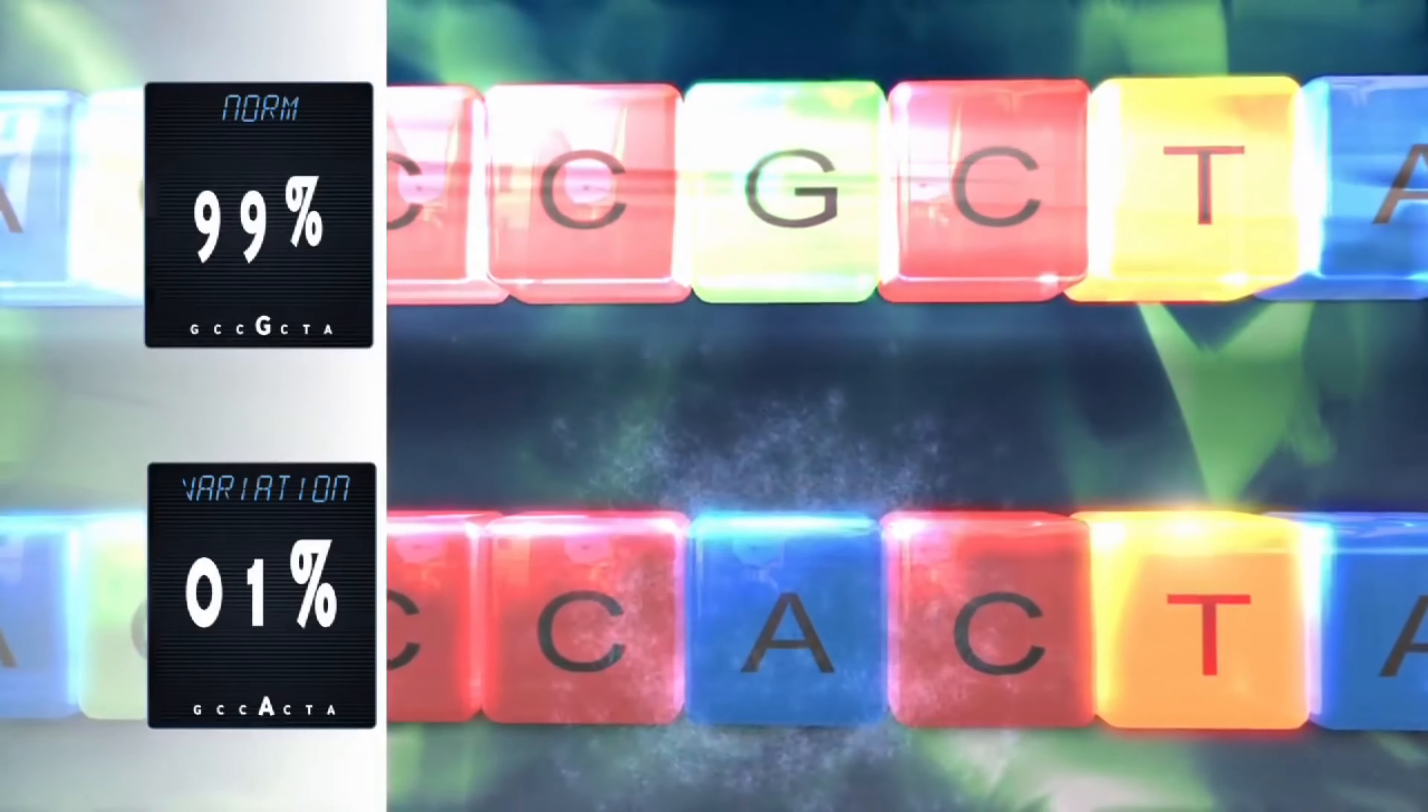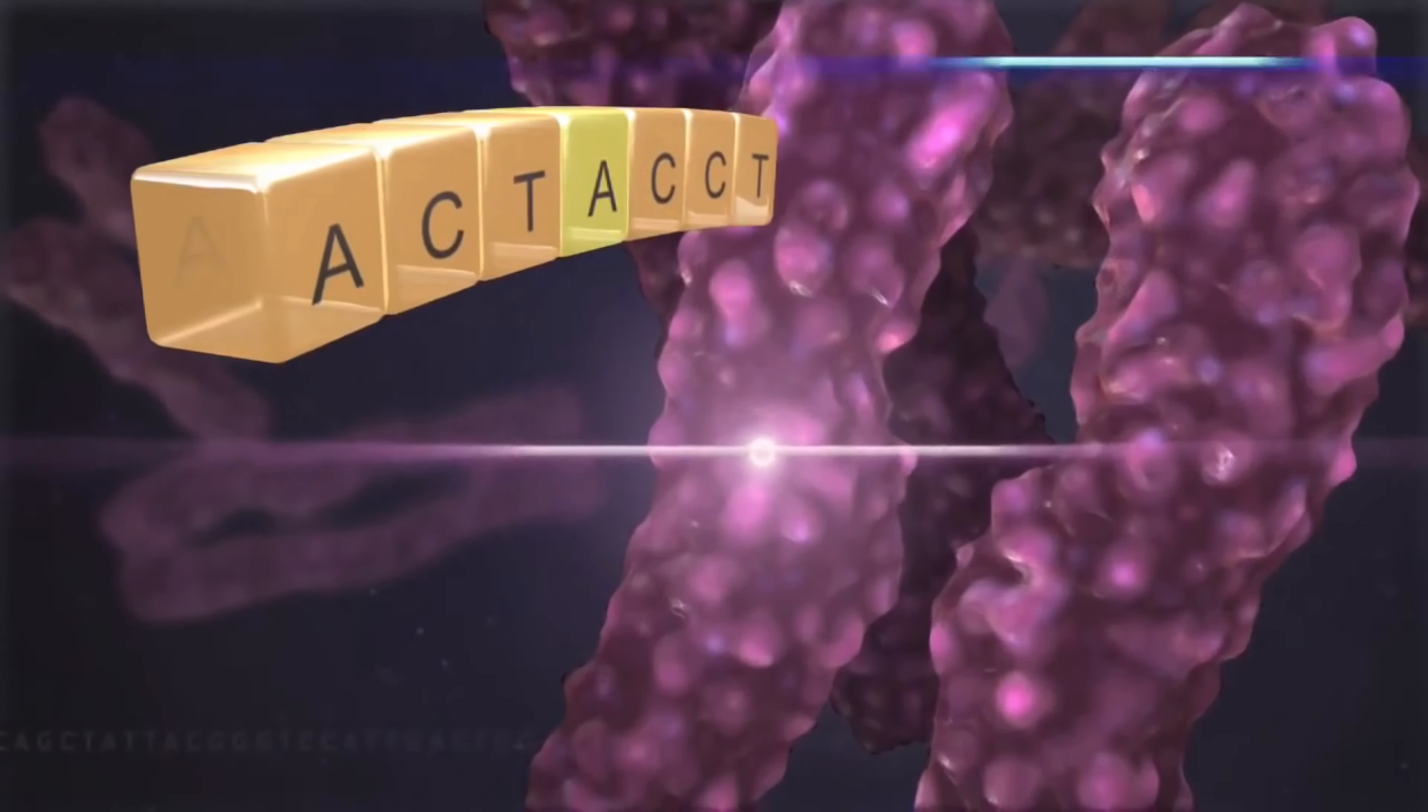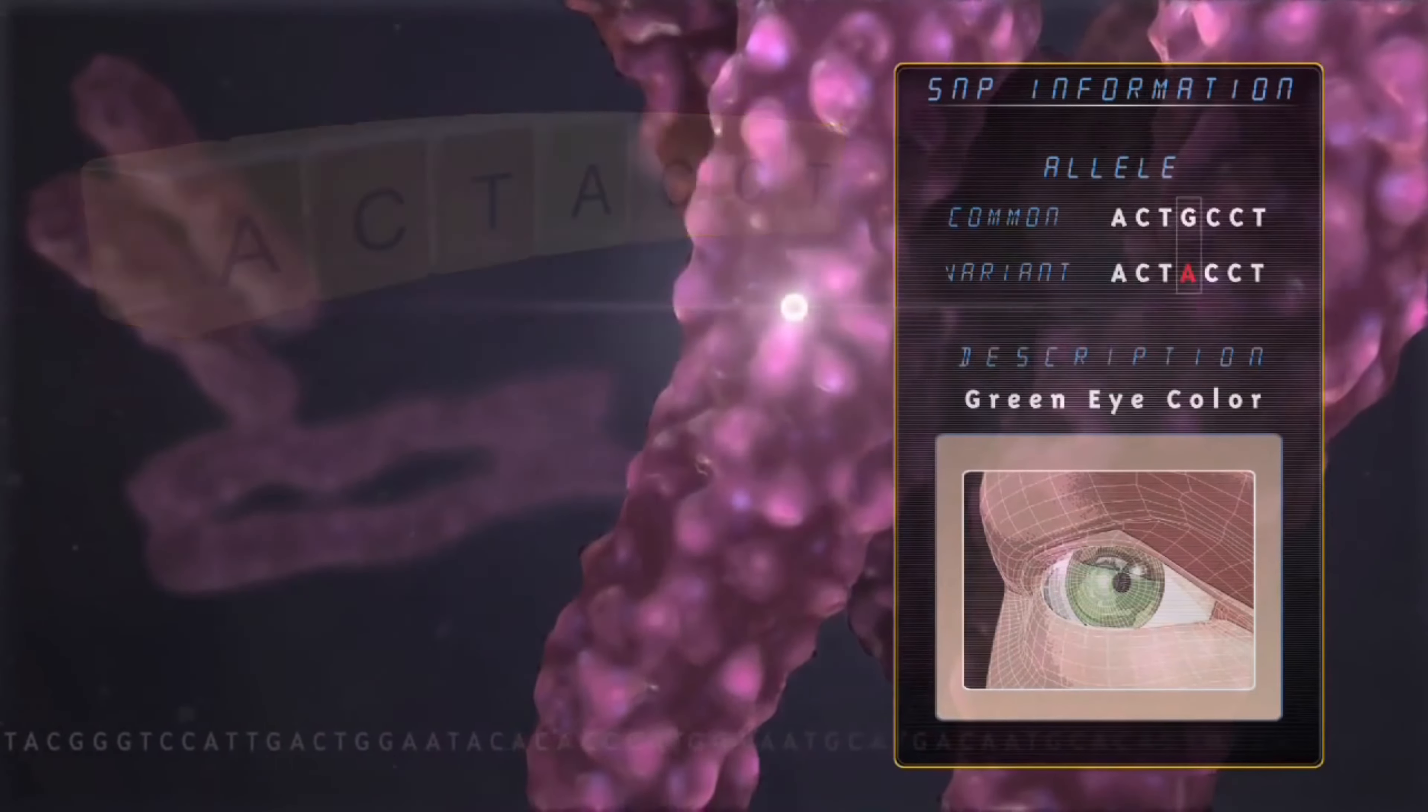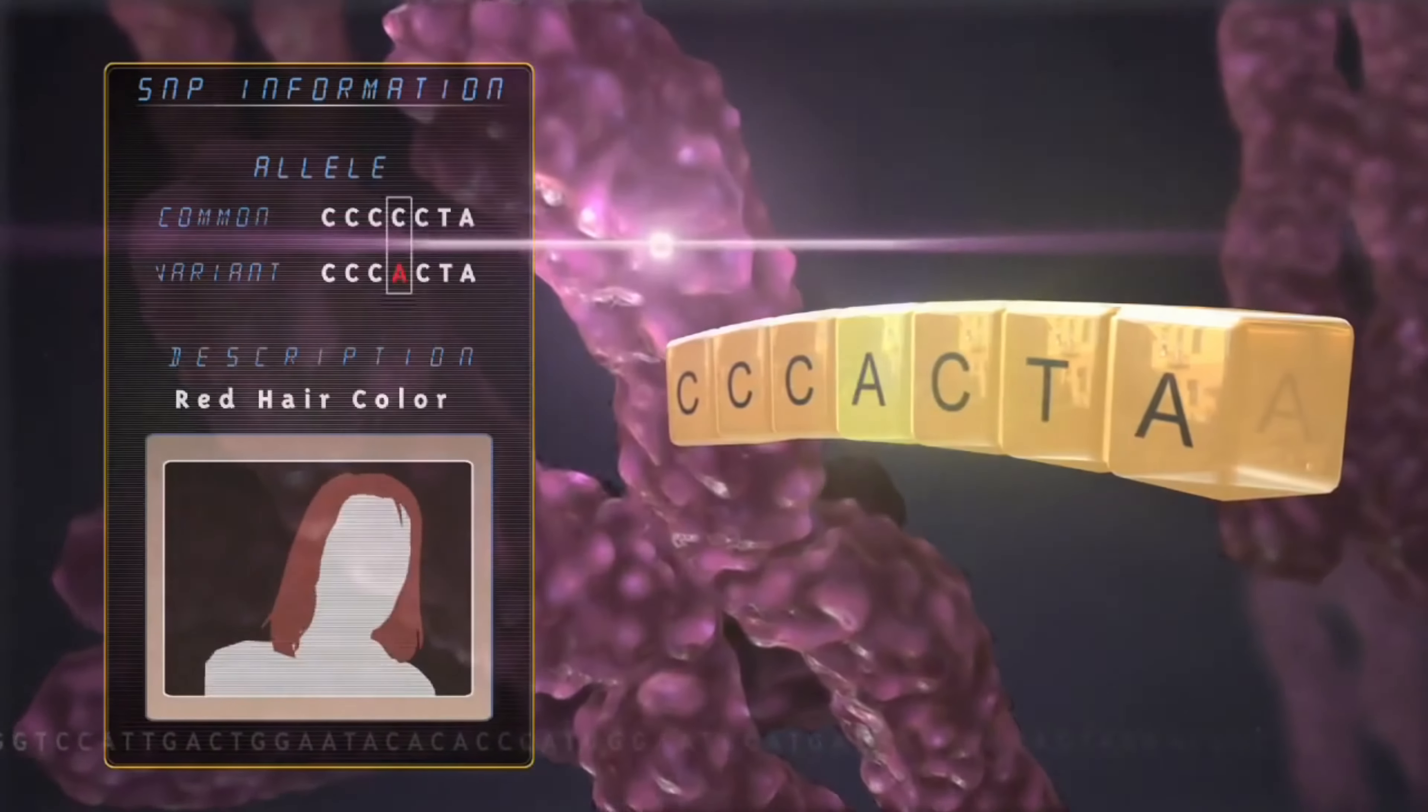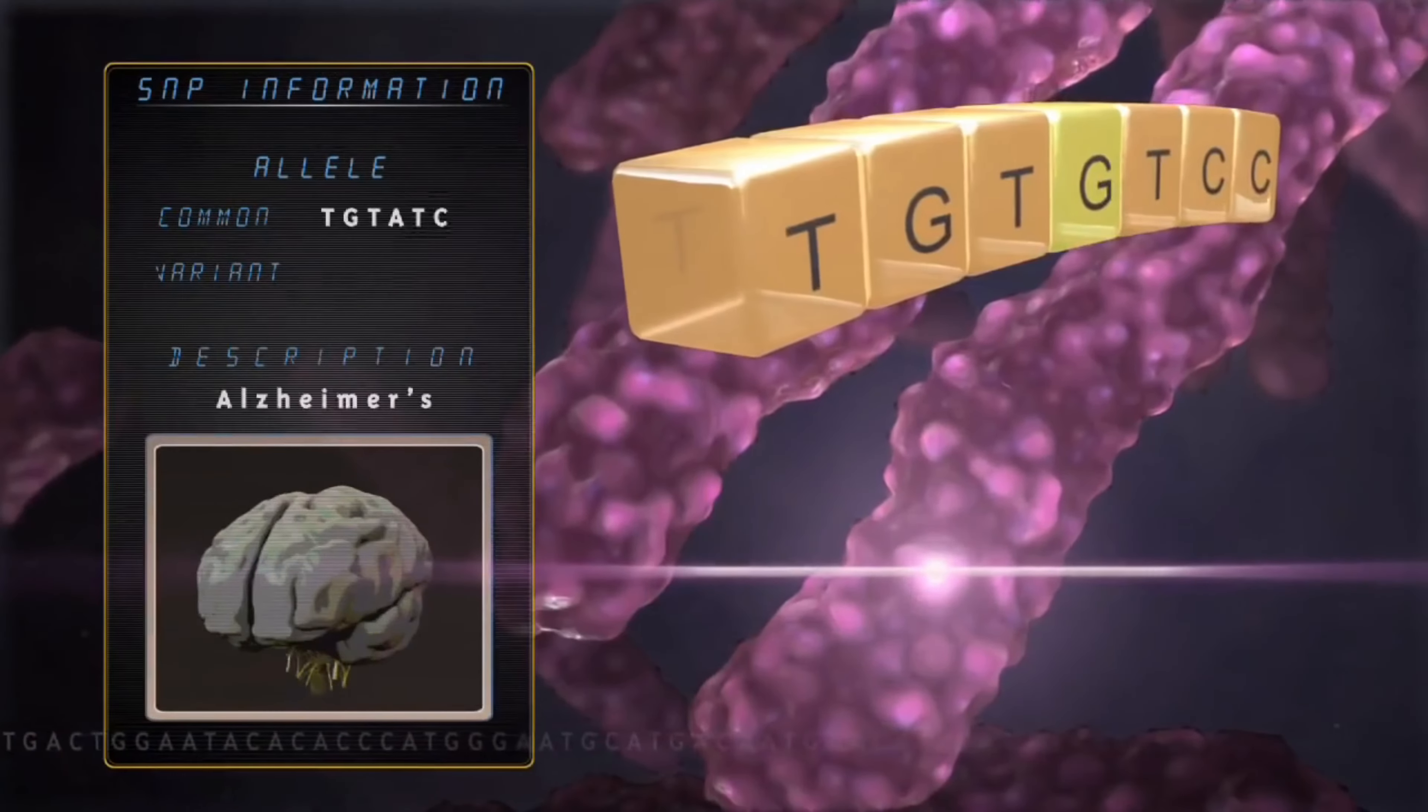Specifically, a polymorphism is any genetic location at which at least two different sequences are found, with each sequence present in at least one percent of the population. Note that the term polymorphism is generally used to refer to a normal variation or one that does not directly cause disease.